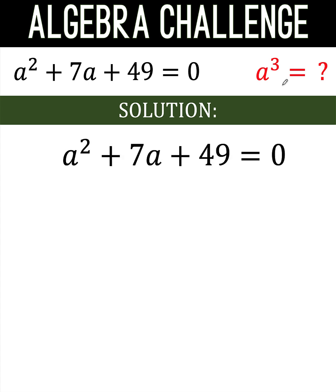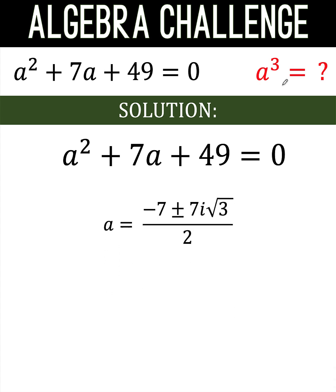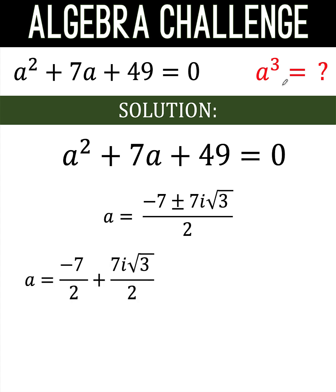And so the solution would look like this. We find the value of a using quadratic formula, and simplifying, we'll notice that the value of a here is a complex number, and there are two of them. One is negative 7 halves plus 7i times the square root of 3 over 2, and the other is negative 7 halves minus 7i times the square root of 3 over 2.